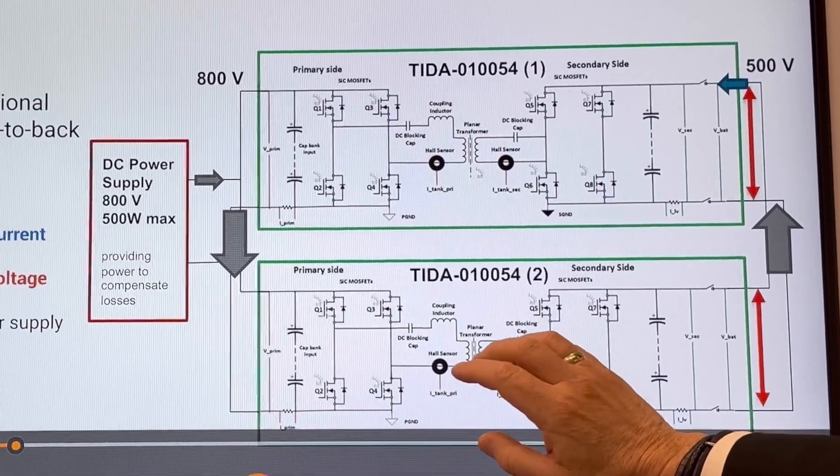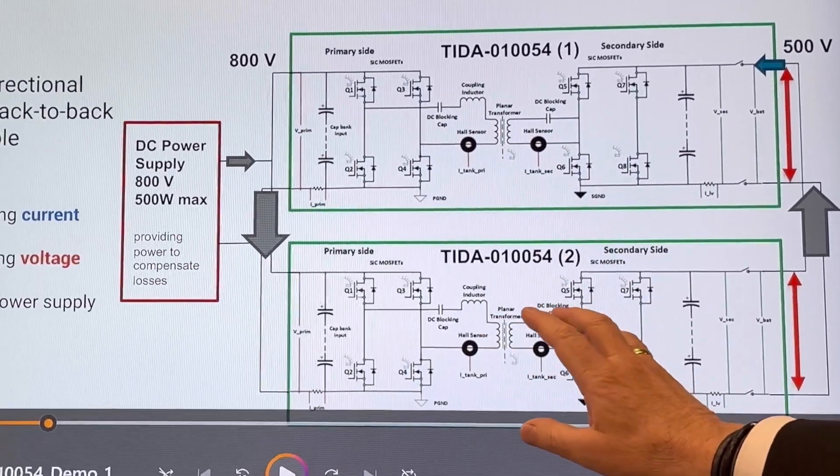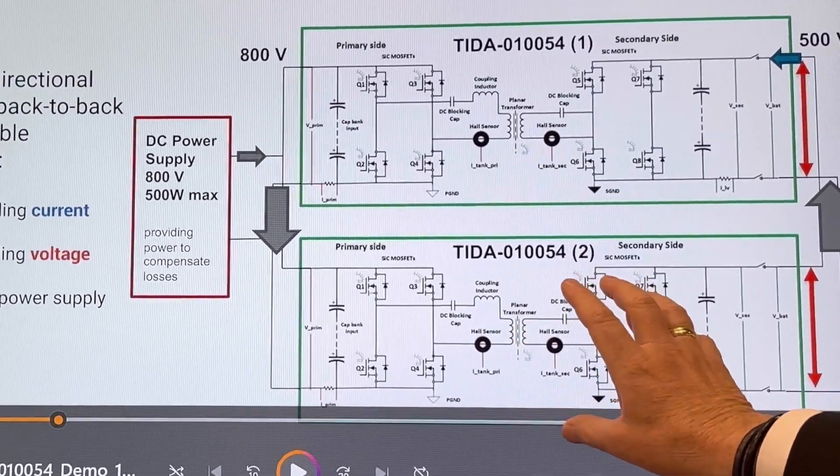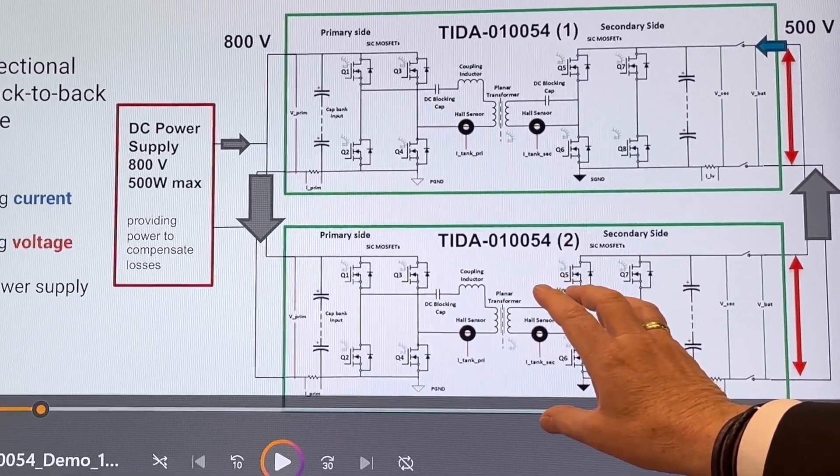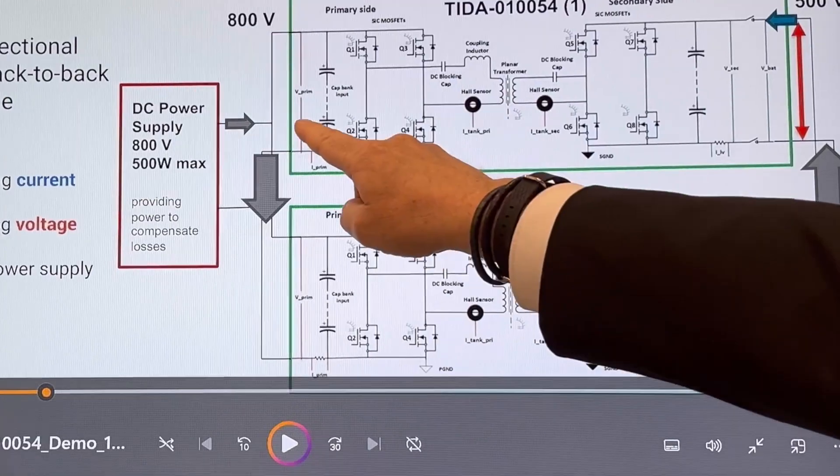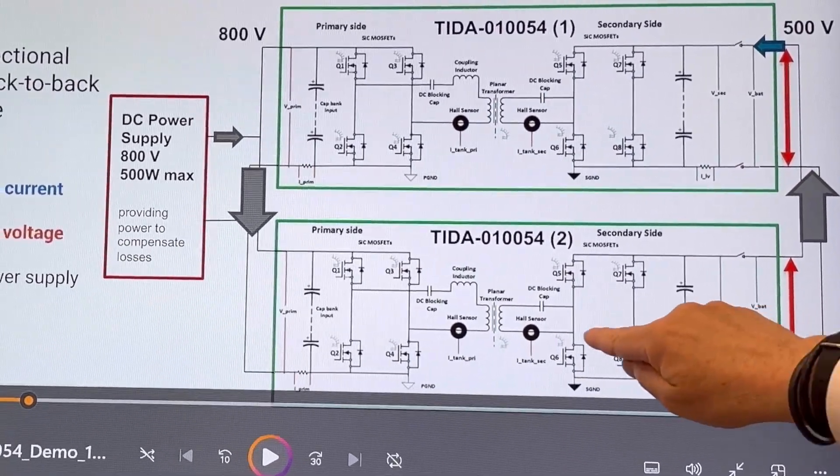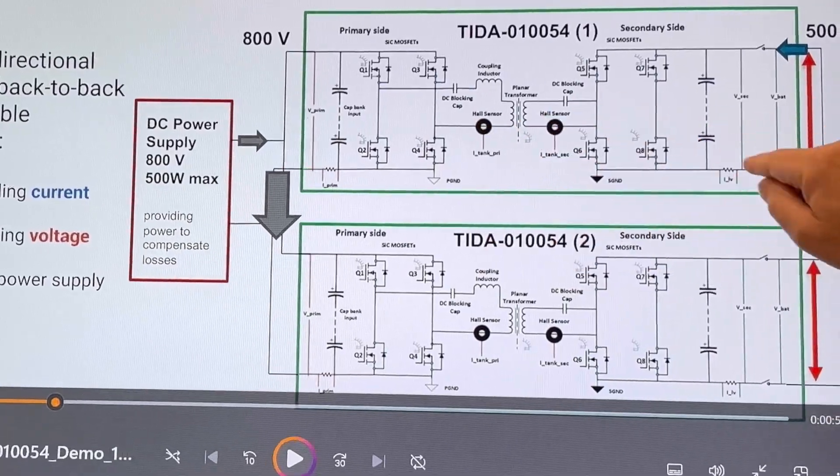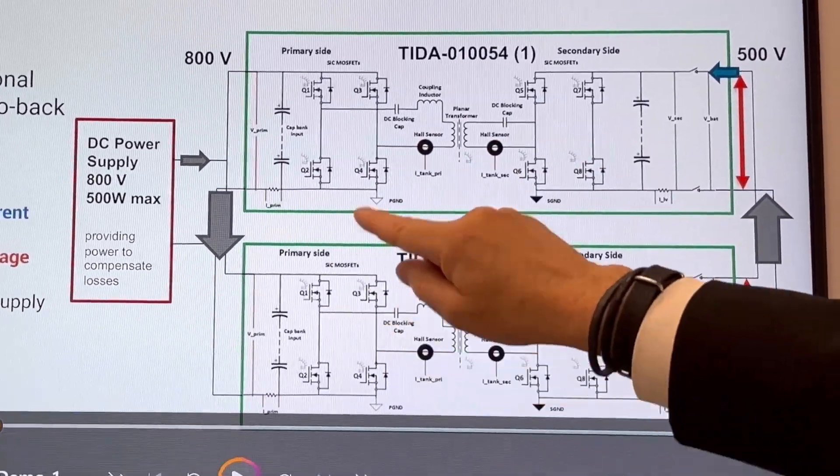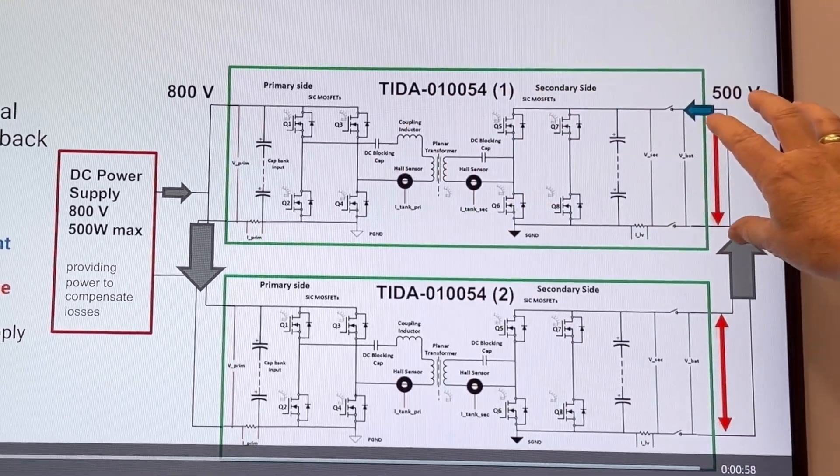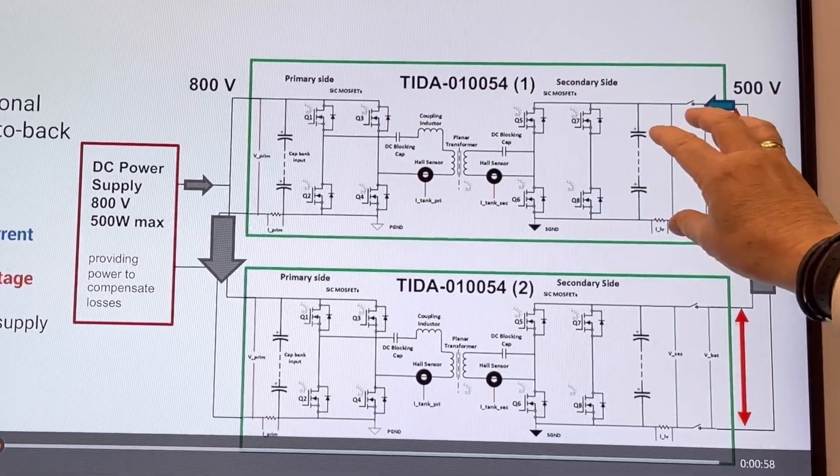In this demo we are basically using two converters. The way we operate or demonstrate the power flow, we put it in a so-called back-to-back configuration. So we are inserting some power here, circulate 10 kilowatt back into the input so that the 10 kilowatts are basically in a closed loop.